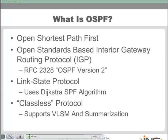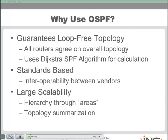OSPF — open shortest path first — is a standard routing protocol. We mention this because EIGRP is not an open standard. We know EIGRP uses something called the diffusing update algorithm, a Cisco invention, and OSPF uses something called Dijkstra's shortest path first algorithm. OSPF is classless, which means it supports variable length subnet masking and summarization techniques. It's guaranteed to be loop free — Dijkstra's algorithm takes care of that. It is standards-based and really designed to be very scalable.